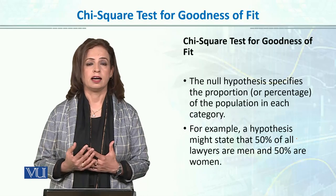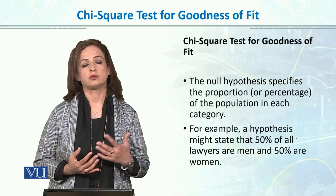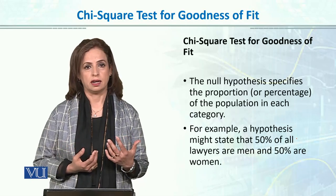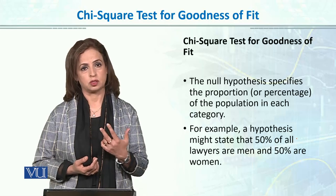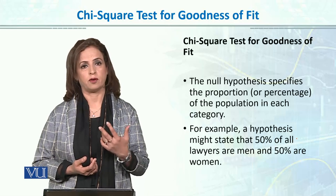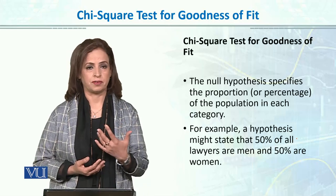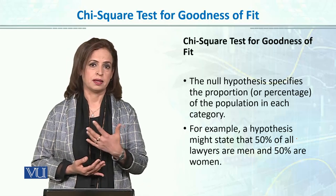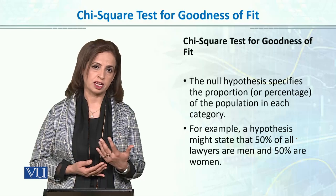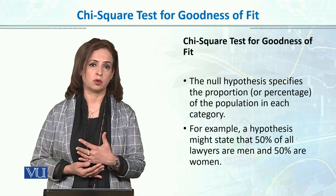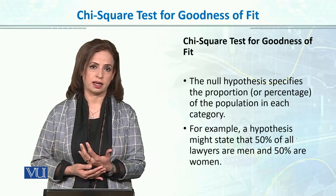For example, we have smokers and non-smokers frequencies — two cells. We also consider variables like male and female, and smoker or non-smoker.